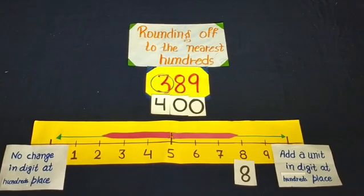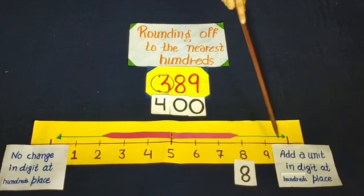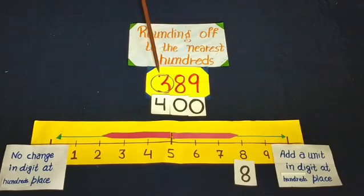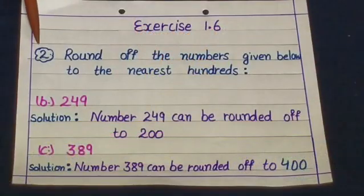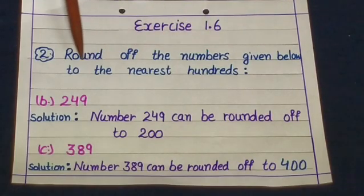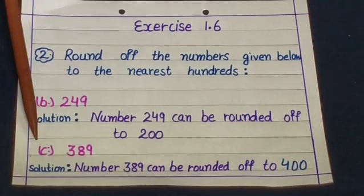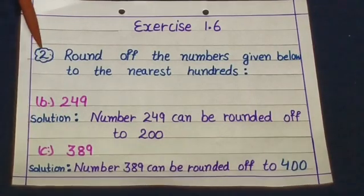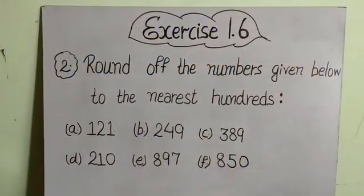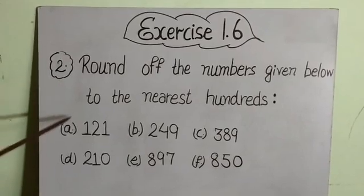Students, rounding in a simple way: if you want to round to hundreds, put two zeros on the right. If tens digit is 5 to 9, add a unit to hundreds with an arrow. Now write on your notebook — statement B: round the numbers given below to the nearest hundreds. Write statement C and solve in the same way. Solve the remaining parts yourself in your notebook.